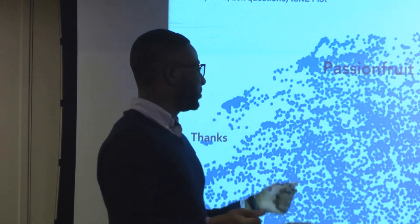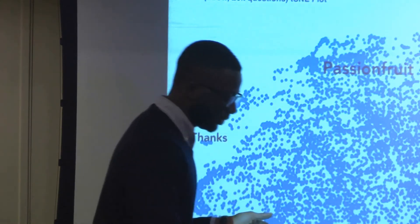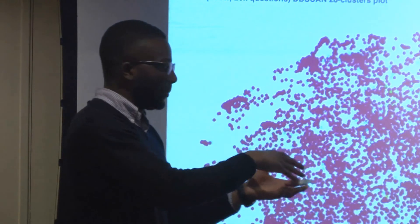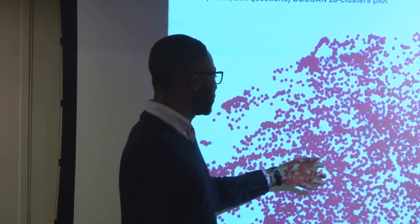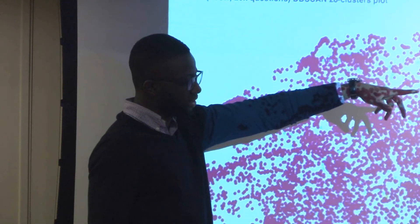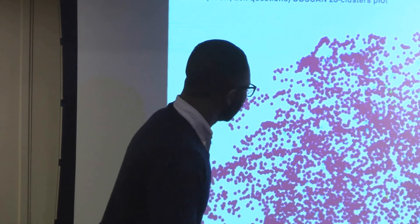My approach was to look at all the questions, cluster them, and then label the questions by which cluster they fall in and try to predict that way. I tried DBSCAN to do the clustering, and one set of parameters came up with 28 different clusters. It didn't do a very good job. The problem is I visualized it with T-SNE, which doesn't necessarily keep distances or densities together in lower dimensional space - this is 200 dimensions being condensed to two, so there's going to be some distortion.